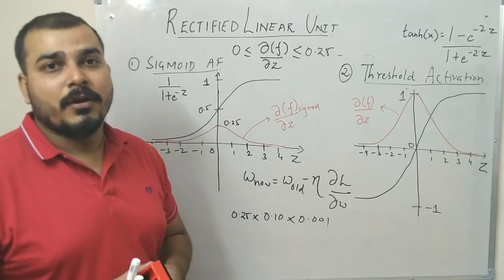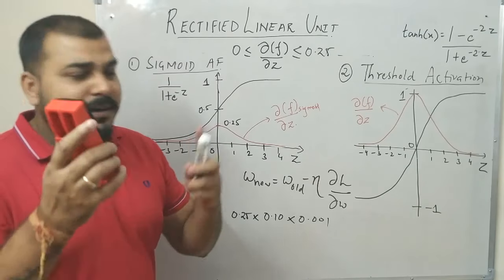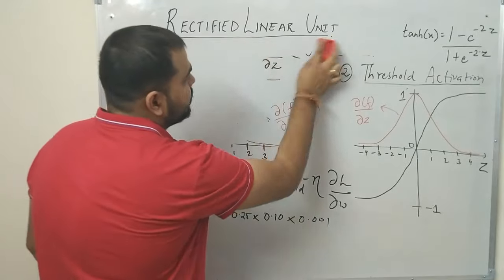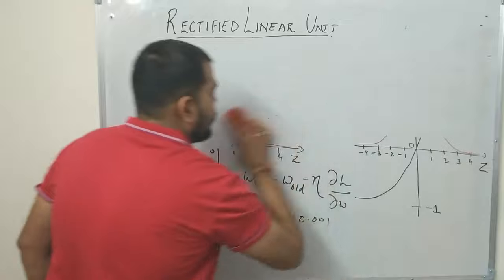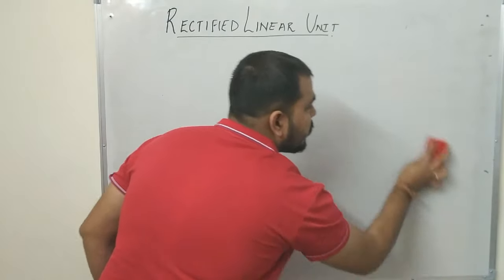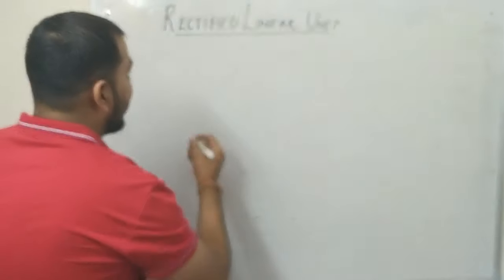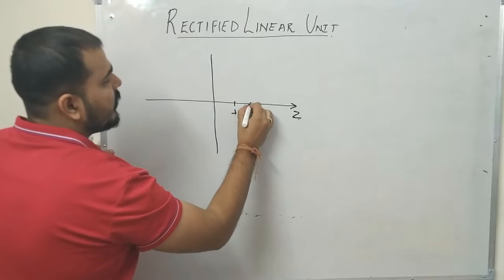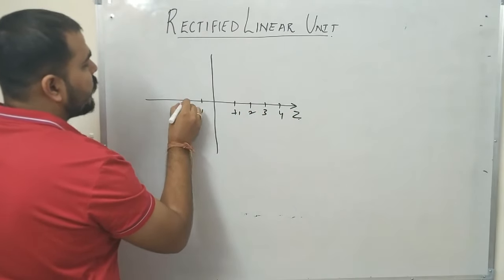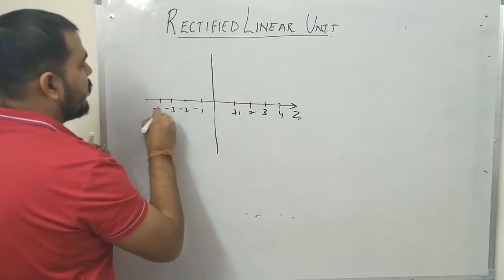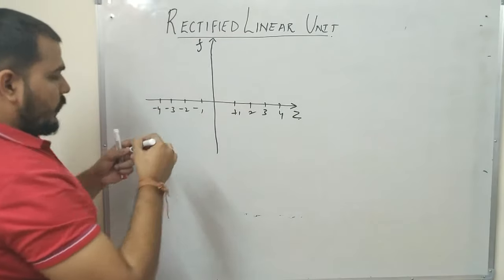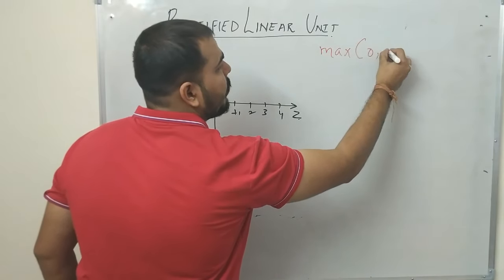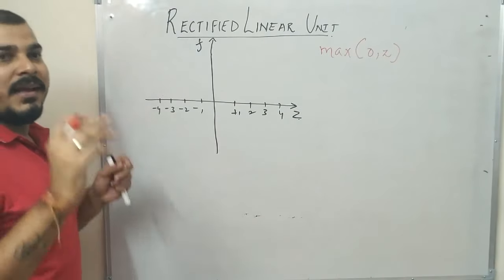To prevent this, how does ReLU help solve the vanishing gradient problem? ReLU activation function has a very simple formula: max of 0, z. Let me draw the diagram. On the z-axis, positive values go to plus 1, 2, 3, 4 and negative values to minus 1, minus 2, minus 3, minus 4. The ReLU formula — max of 0, z — means that whenever z is negative, all those values will be equal to 0.